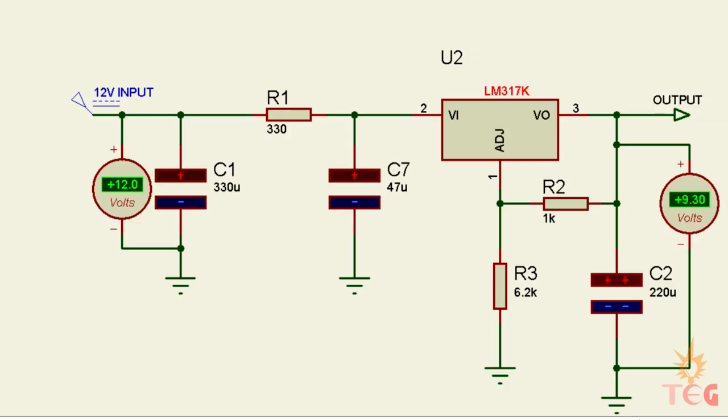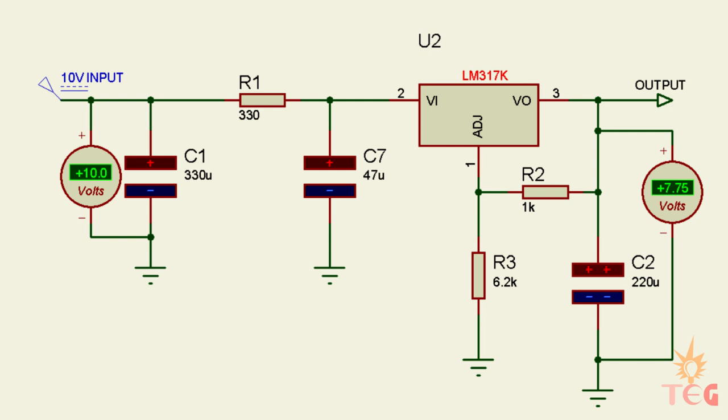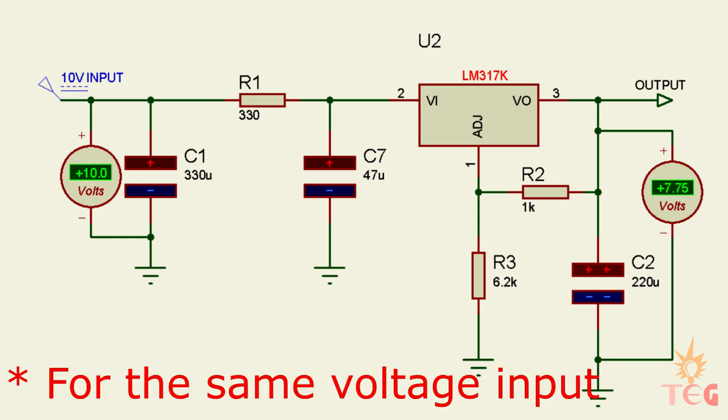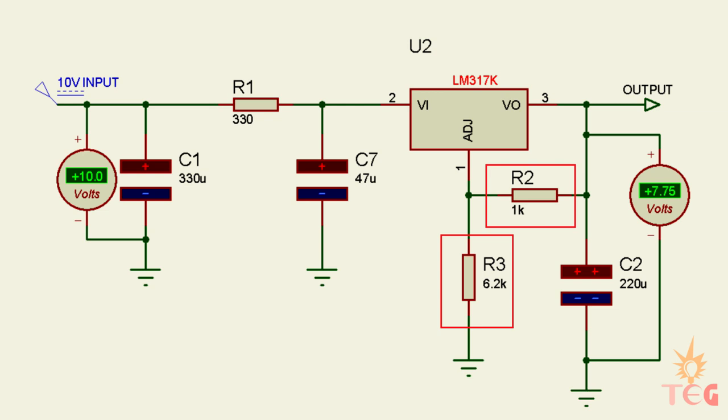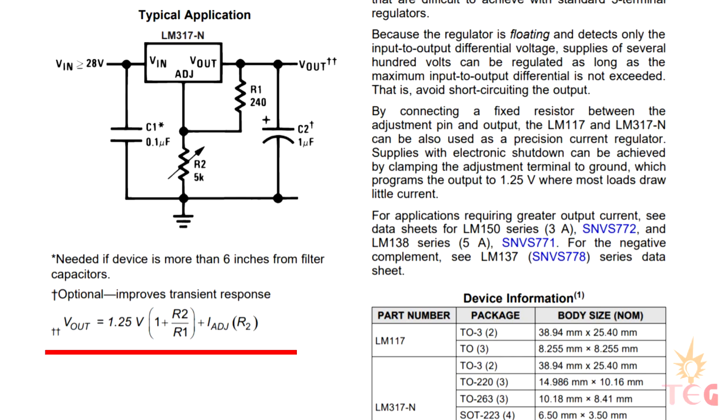This voltage regulator is programmed using these two resistors to give a constant voltage of 9 volts. It's worth mentioning that to produce this 9 volts however, dropout voltage must be greater than 2.5 volts or input voltage must be at least 11.5 volts. To get voltage output other than this, you have to change these resistor values according to the formula mentioned in the datasheet.